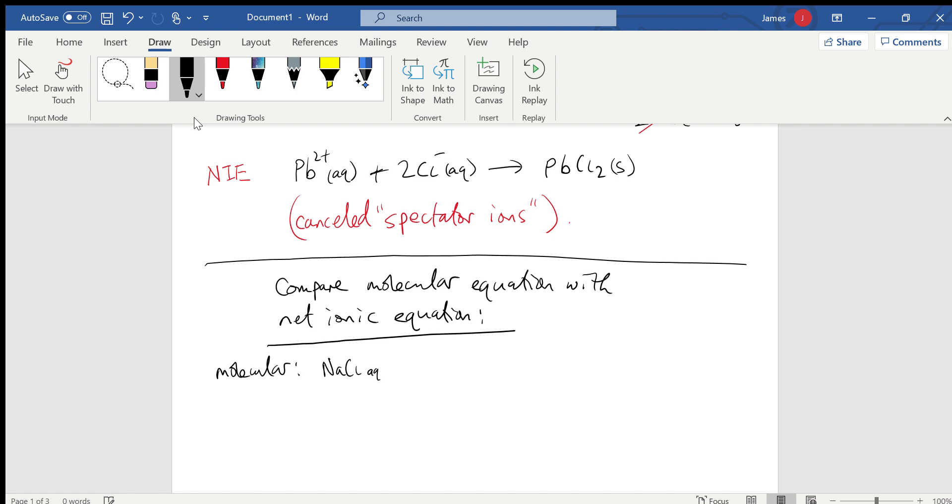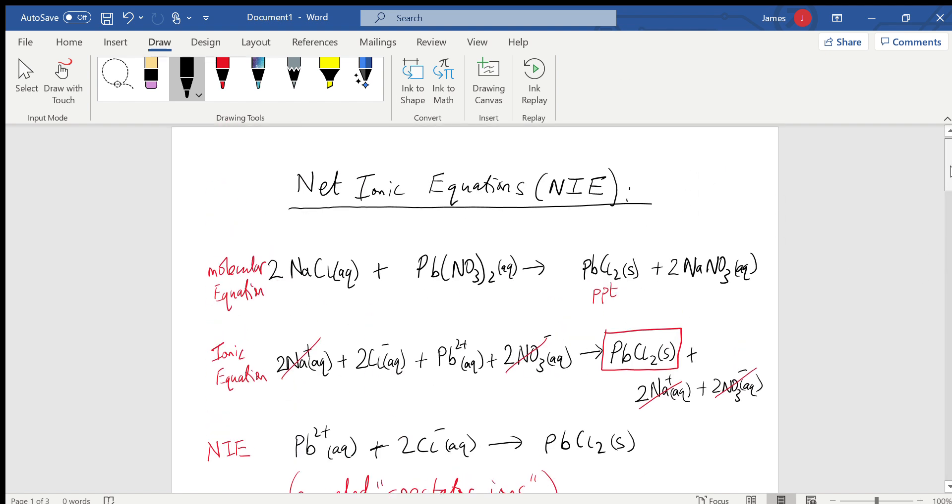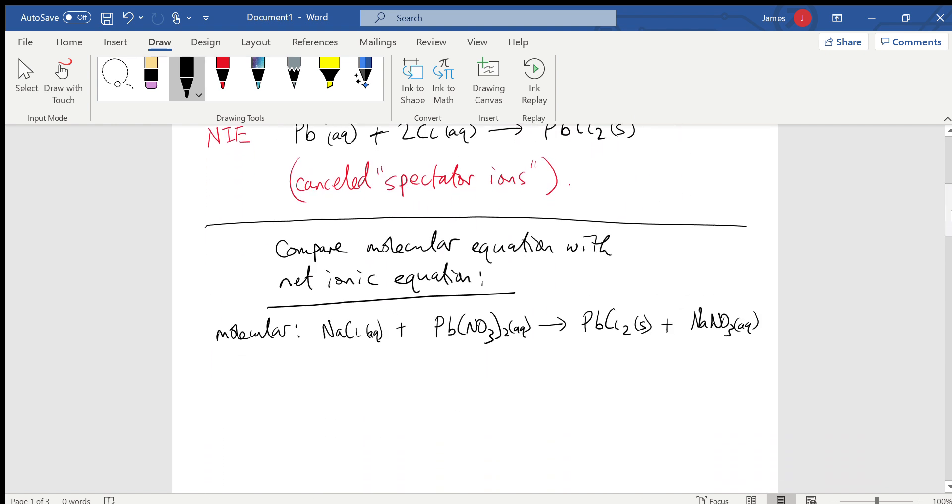The molecular, I'll just rewrite it again. The molecular was 2NaCl + Pb(NO3)2, then we had PbCl2 + 2NaNO3. So let me remind myself where those coefficients were: 2, 1, 1, 2. The net ionic equation we can see was Pb2+ and 2Cl-, and that gave us PbCl2.